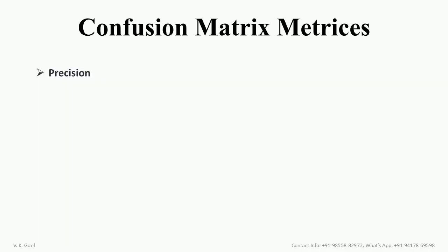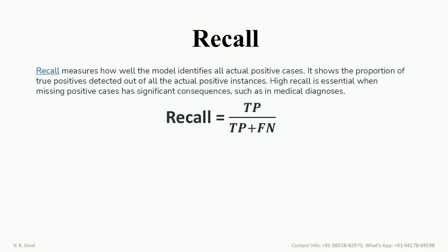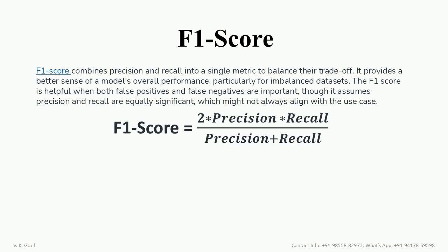A confusion matrix is associated with 3 important metrics: precision, recall, and F1 score. Precision tells how many of the instances predicted as positive are actually positive. Recall shows the proportion of true positives detected out of all the actual positive instances. F1 score provides a better sense of a model's overall performance, particularly for imbalanced datasets.